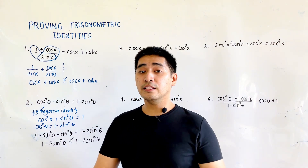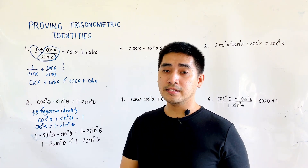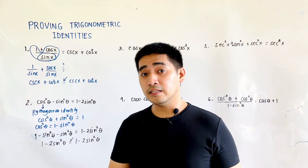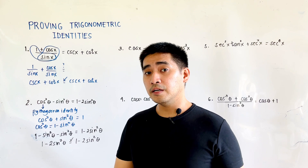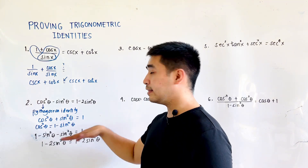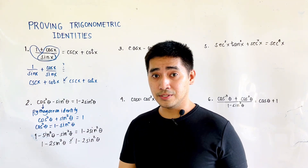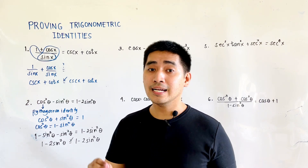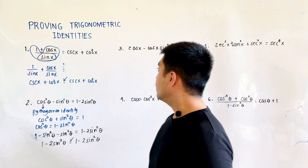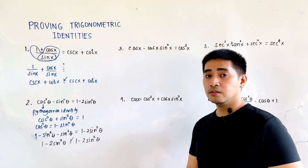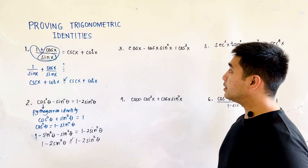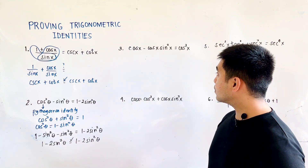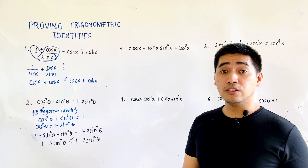Remember, we have Pythagorean identities. When choosing which one to use, look at the side you are not manipulating — that is your reference and guide. For example 3, we are given: cos x - cos x·sin²x = cos³x.